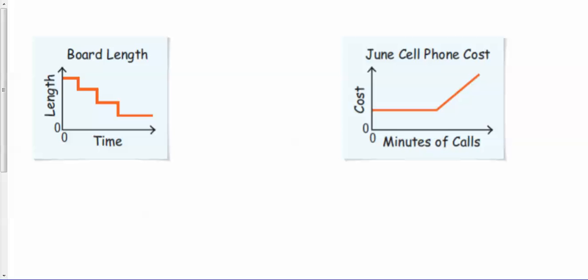All right, so let's look at analyzing a graph. You have two graphs. The one on the left is talking about board length. What are the two variables in the graph here? The two variables you have are time and length. So how are the variables related at various points of the graph? If you look at this part right here, as time goes on, what can you say about the length of the board?